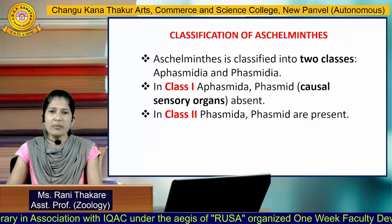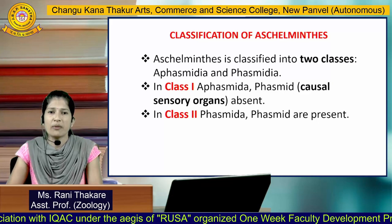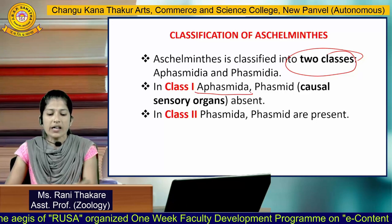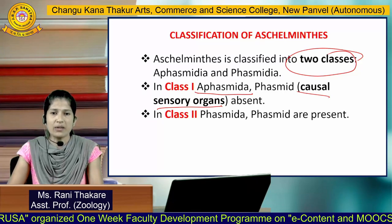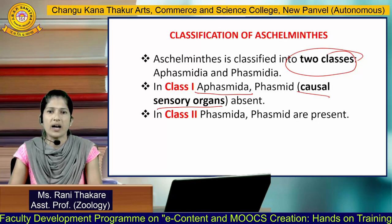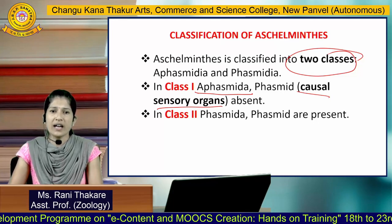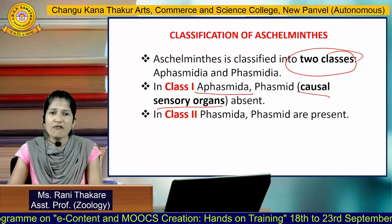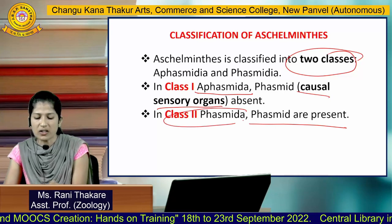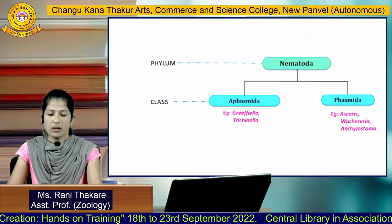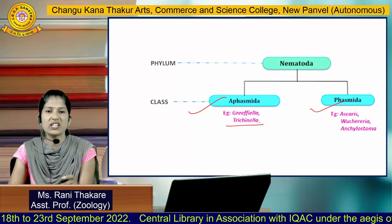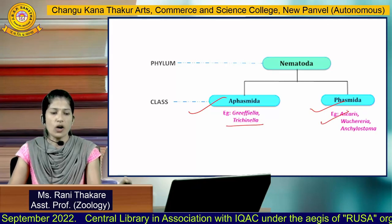Classification of Aschelminthes: members are classified into two classes based on the presence of phasmids, which are caudal sensory organs. When phasmids are absent, animals are placed under class 1, Aphasmida. When phasmids are present, they are placed under class 2, Phasmida. In class 1 Aphasmida, the example studied is Trichinella; in class 2 Phasmida, the example is Ascaris.